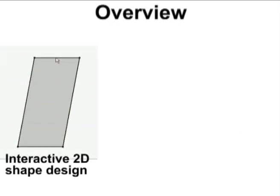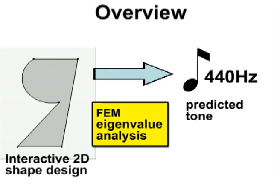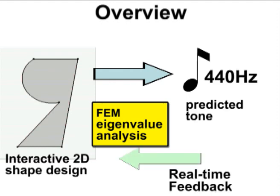Here is an overview of our metallophone design system. The user interactively designs the two-dimensional shape of a metallophone. Using finite element eigenanalysis, the system predicts the tones the metallophone will produce when struck. With real-time feedback from simulation, the user can creatively design the shape of metal plates to produce specific tones.